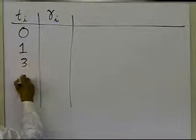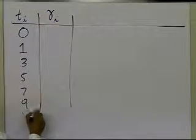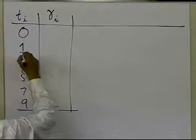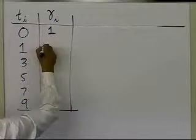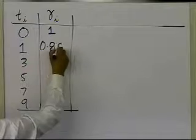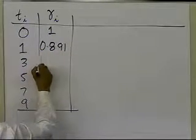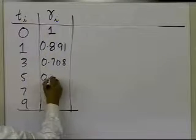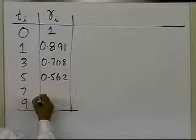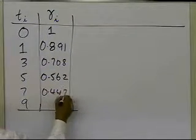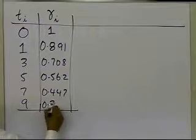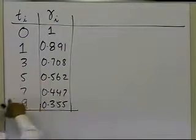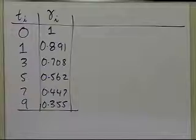0, 1, 3, 5, 7, 9. So these are all which are given to us, these data values which I'm writing. 1, 0.891, 0.708, 0.562, 0.447, and 0.355. So these values are already given to me as gamma versus t data.